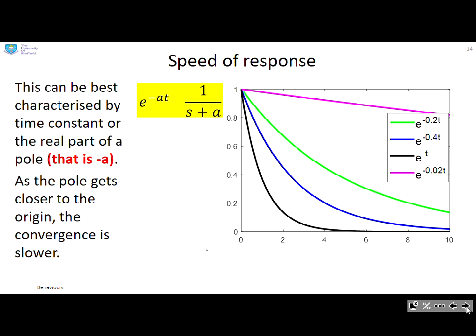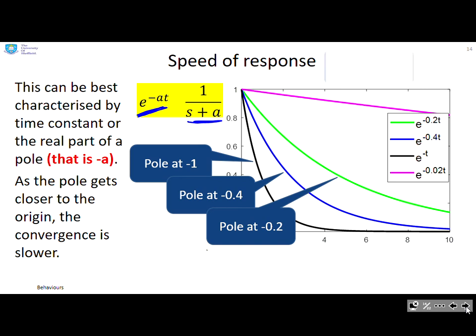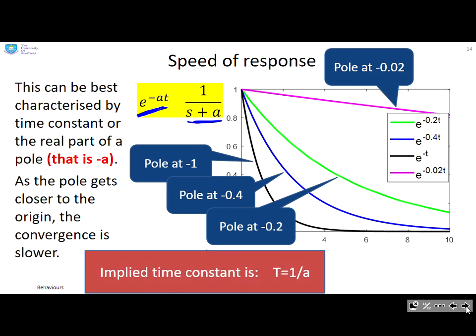Next characteristic we're interested in is speed of response. This is best characterized by the time constant or equivalently the real part of the pole. You can see here I've got e to the minus at and the pole is essentially at minus a. What you will see is as the pole gets closer to the origin, the convergence is slower. So if we look at this black curve, which is e to the minus t, the pole is at minus one. For the blue curve, the pole is at minus 0.4. For the green curve, the pole is at minus 0.2, and for the pink curve, the pole is at minus 0.02. So as the pole moves nearer to the origin, the speed or the convergence gets slower. The implied time constant is t equals one over a.